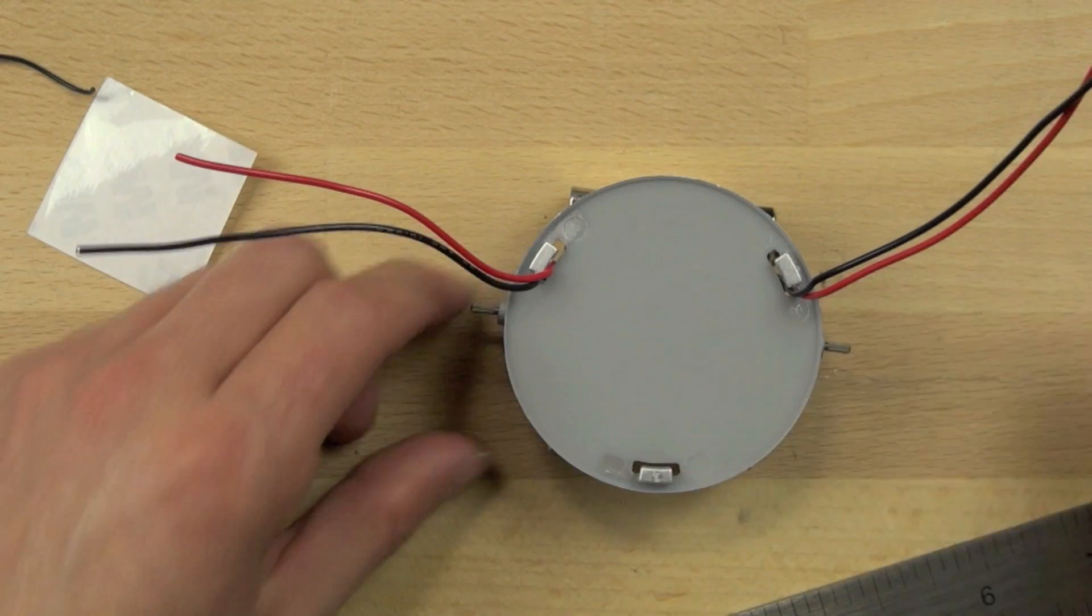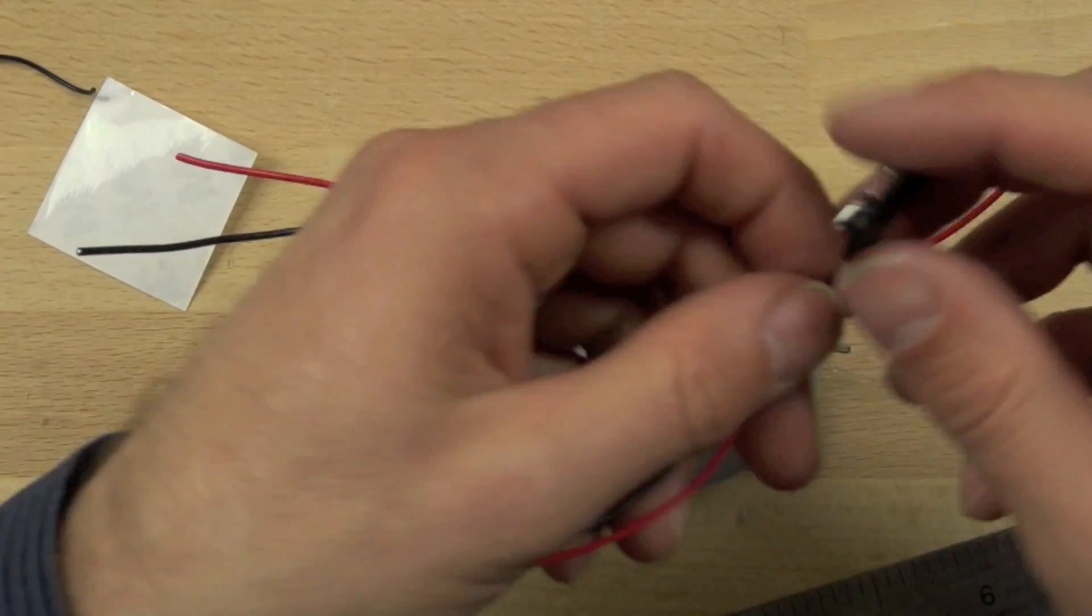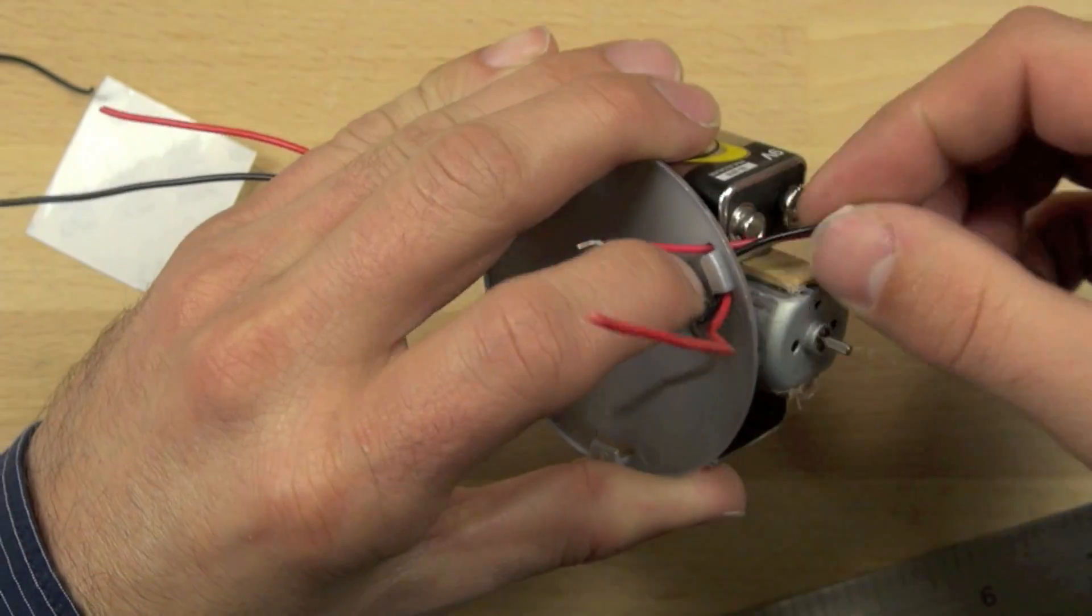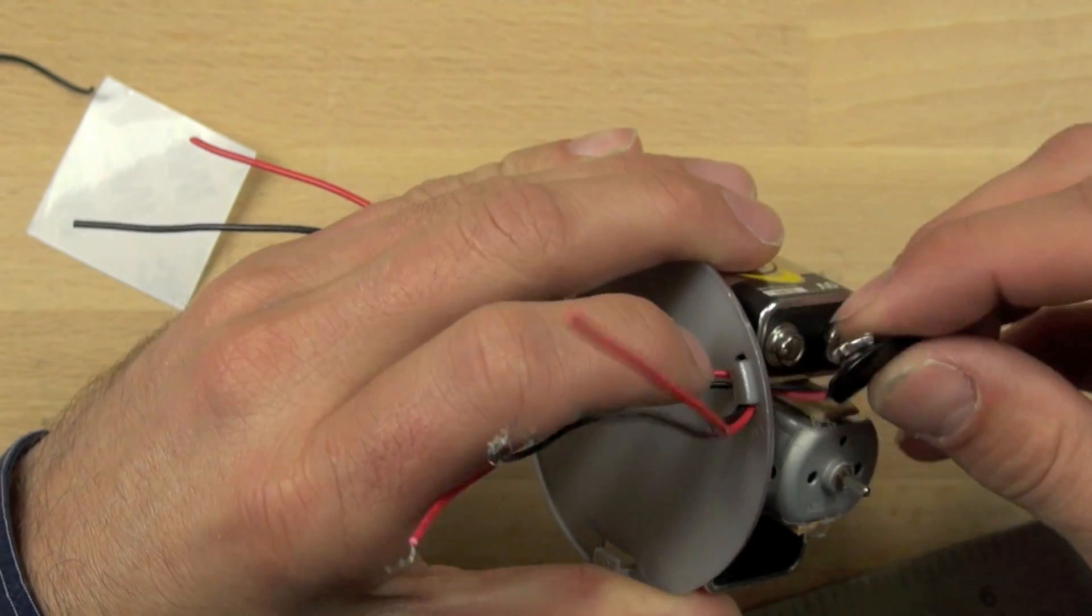Now we're going to connect our battery wires. The battery wires need to come in through the same hole on the right side, and we'll connect our 9-volt battery connector.